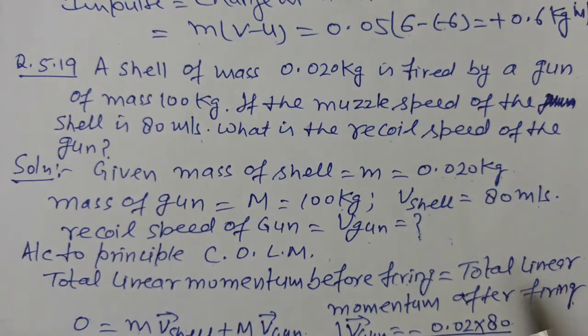But total linear momentum after firing is: momentum of shell plus momentum of gun. Mass of the shell times velocity of the shell, plus mass of the gun times velocity of the gun.